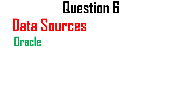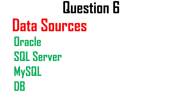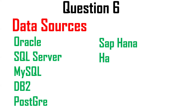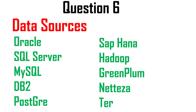Next question: data sources. Snowflake is mainly used for data migration projects. Source databases can include Oracle, SQL Server, MySQL, DB2, PostgreSQL, SAP, Hadoop, Greenplum, Teradata, and more. Depending on the company, we migrate from one of these data sources into Snowflake.